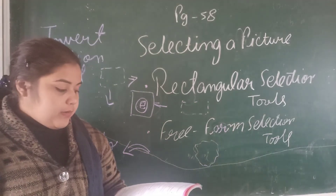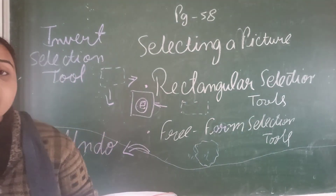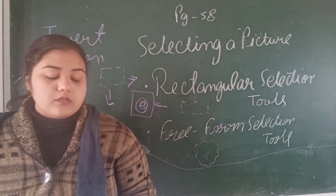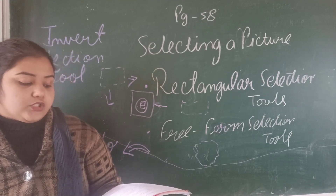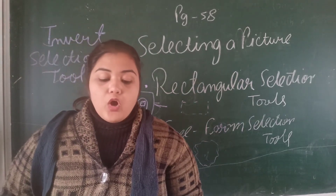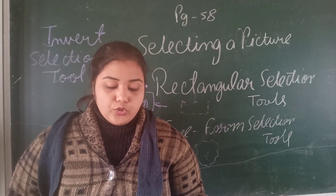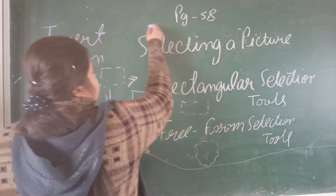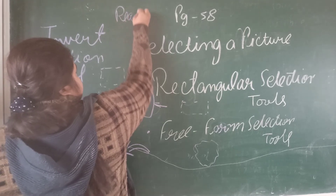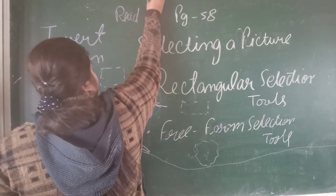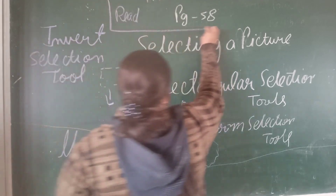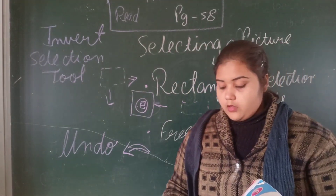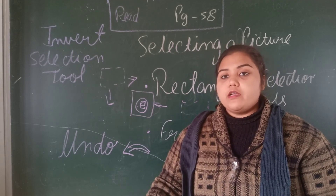Today we studied how we can modify a picture and how we can select a picture. For selecting the picture we can use two types of selection shape tools: the first one is rectangular selection and the second one is free form. You will find all these tools in the home tab under the image group. For homework, read page 58 and note it in your ID. Some other topics are also there that we will cover in our next class.